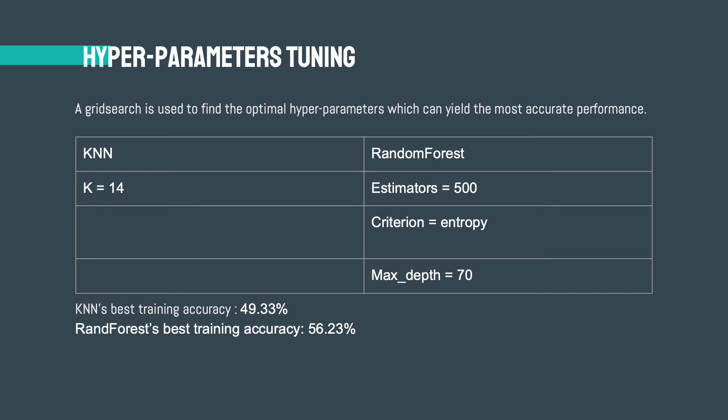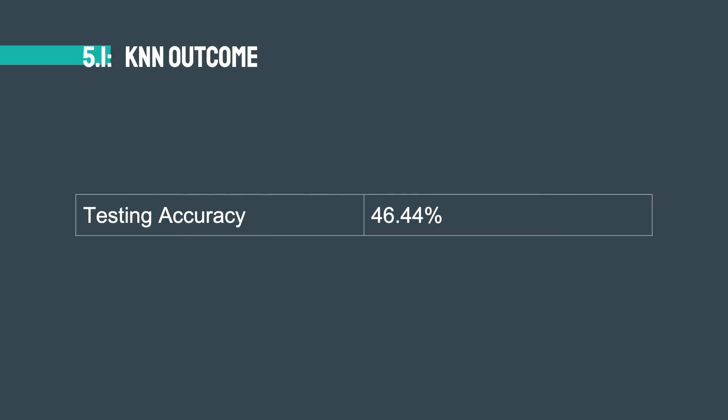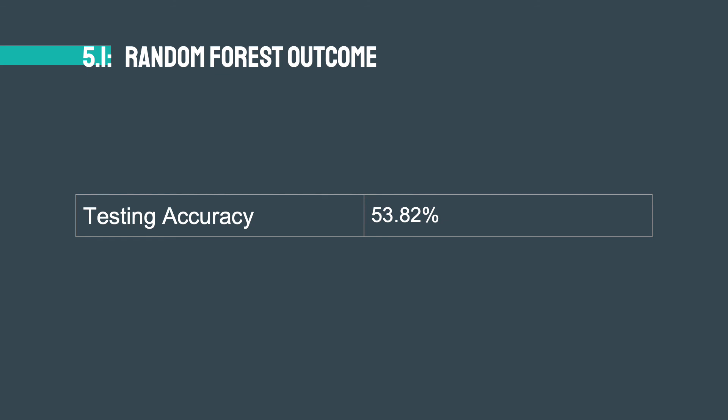This graph shows the parameters selected by grid search, and based on these hyperparameters, the optimal training accuracy for both models is given. We then use the model with optimal hyperparameters to make predictions on the test dataset. The KNN model gives a prediction accuracy of 46.44%, which is not desirable as it is worse than a random guess. The Random Forest model performs much better, giving a test accuracy of 53.82%.